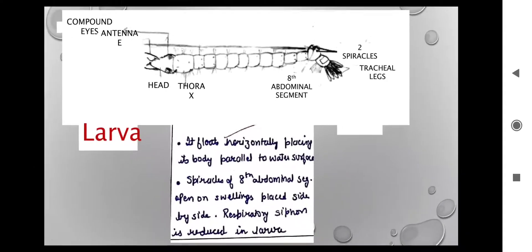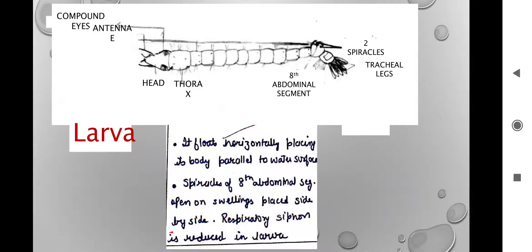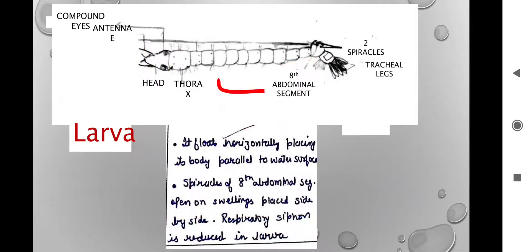Now the spiracles — this is the kind of question generally asked in every exam: bank exams, railway exams, ICMR, or any other. Spiracles are the respiratory structures; as we have lungs, insects have spiracles. The spiracles of the 8th abdominal segment open on the swelling placed side by side. Here is the 8th abdominal segment — you can see the head, thorax, and the abdomen with segments 1 through 8. So if asked on which abdominal segment the spiracles of Anopheles mosquito are placed, the answer is the 8th abdominal segment.